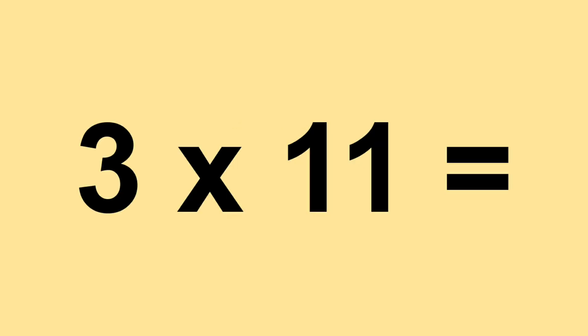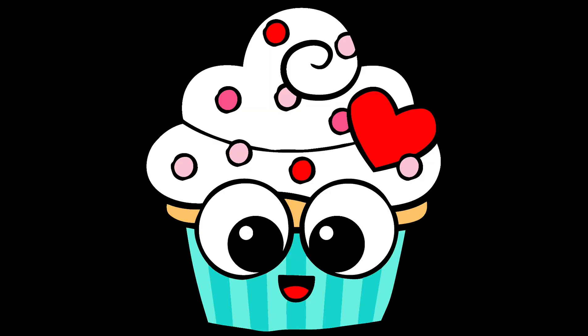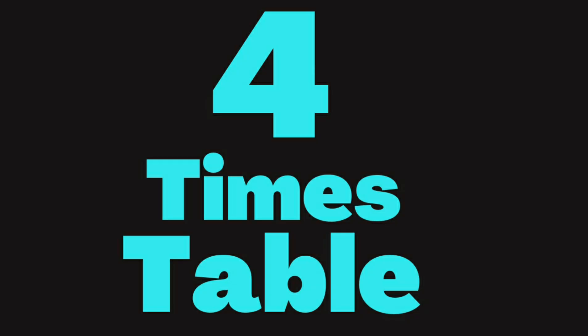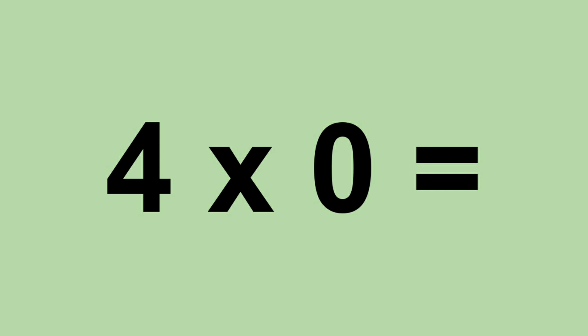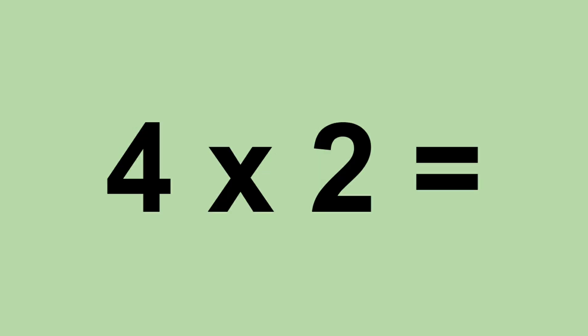Three times ten equals thirty. Three times eleven equals thirty-three. Three times twelve equals thirty-six. Four times zero equals zero. Four times one equals four. Four times two equals eight.